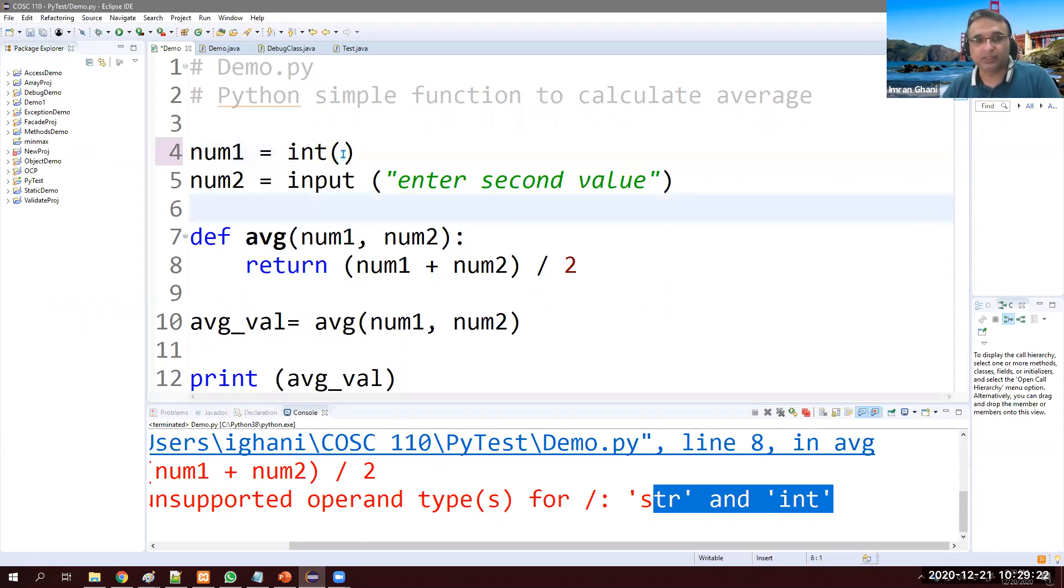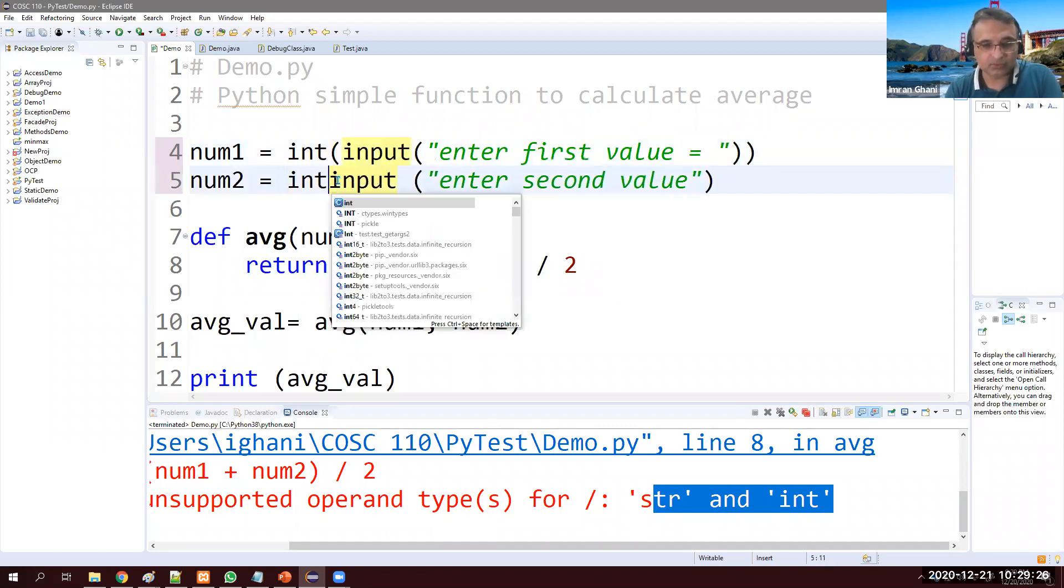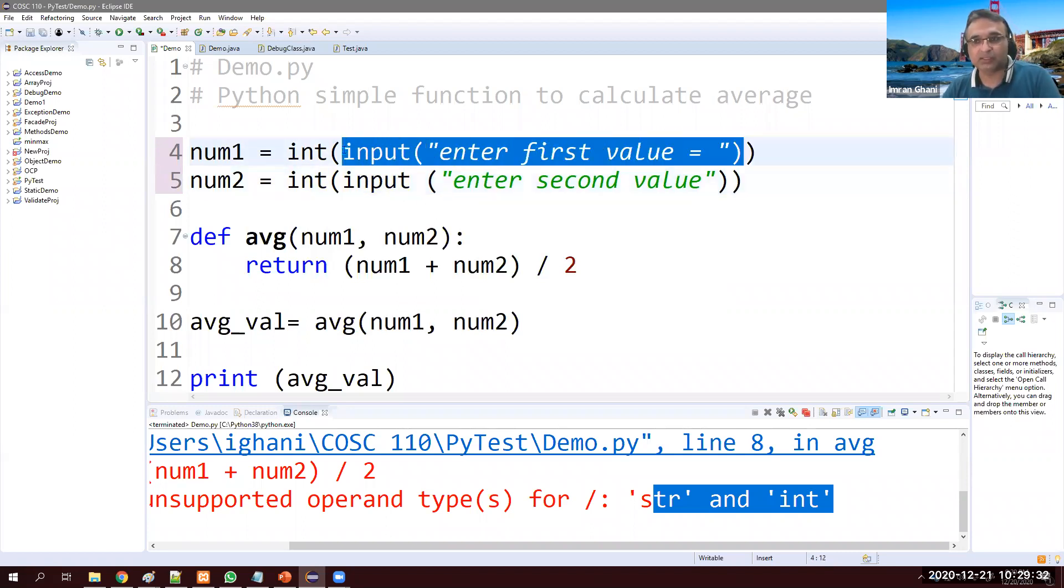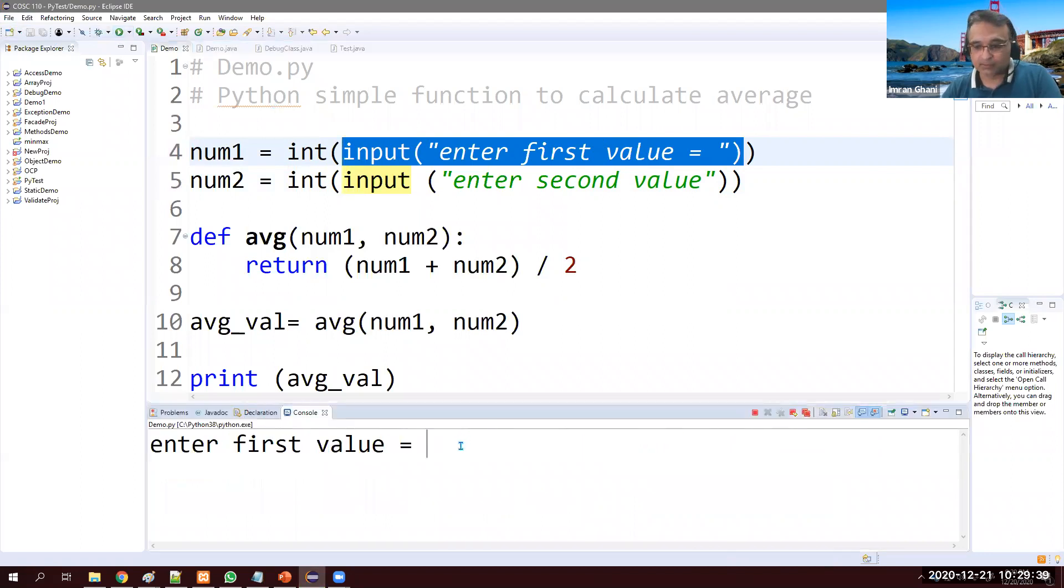int in parenthesis, so we'll put that one here inside: int, int. So whatever value now we get, 10, 20, 30, 50, that will not be dealt as string, it will be dealt as integer. So let's see now: 10, 20, now it's good.